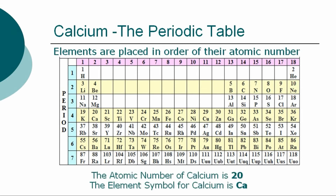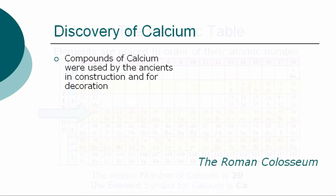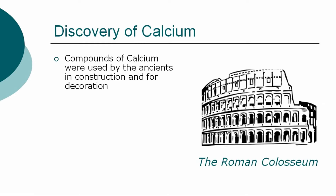The atomic number of calcium is 20 and the element symbol for calcium is Ca. Compounds of calcium, such as limestone, chalk, marble, and gypsum plaster, have been used in construction and for decoration since antiquity.